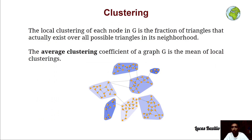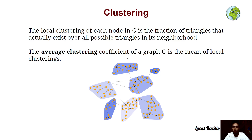Let's begin with the local clustering. We define the local clustering of each node in a given graph G as the fraction of triangles that actually exist over all possible triangles in its neighborhood. Therefore, the average clustering coefficient of a graph G is essentially the mean of all of the local clustering.